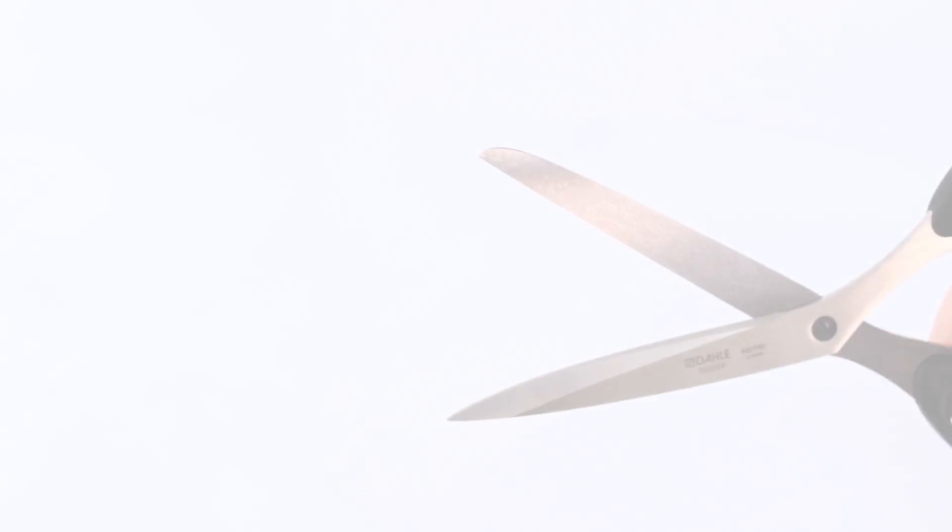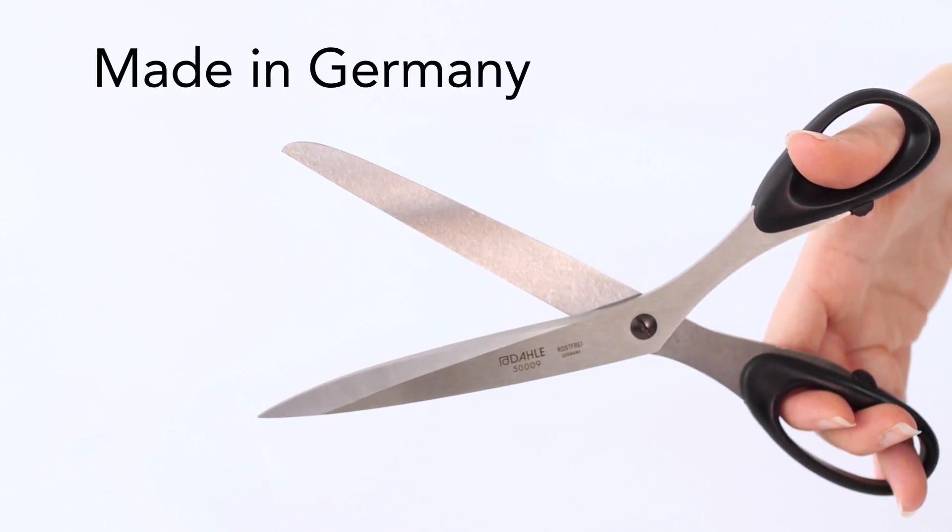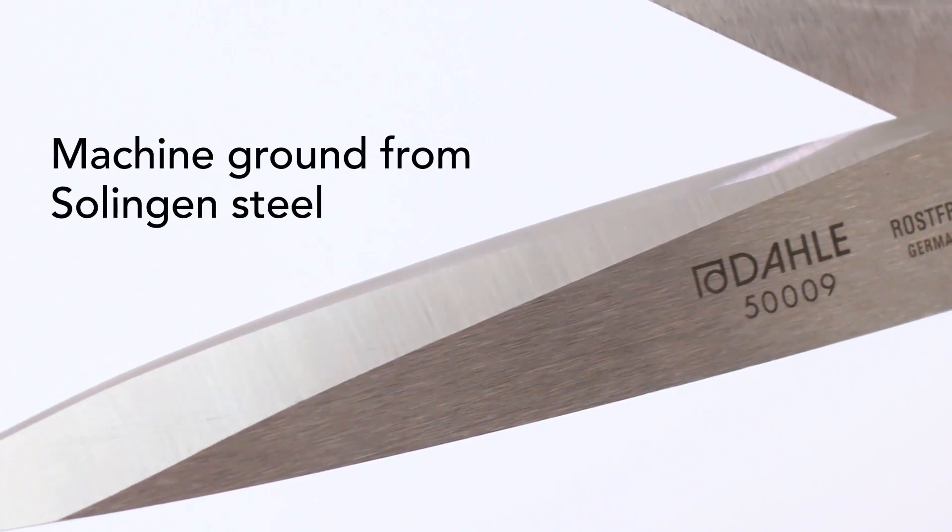Like fine cutlery, Dahle Super Shears are made in Germany and machine ground from German Solingen steel.